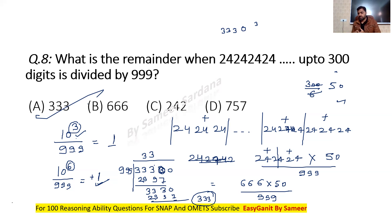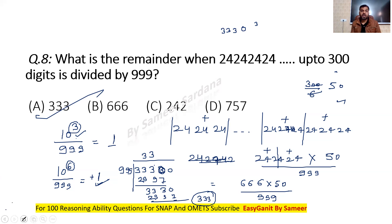These are the 8 questions from basic remainder theorems, unit digit, and last-digit methods. I'll be uploading part 2 of number system covering Euler remainder theorem, Wilson's remainder theorem, and other basic remainder theorems. Subscribe to the channel to access 100 reasoning ability questions for SNAP and OMADS. There's already a compiled video of 100 reasoning ability questions that will really help you for SNAP. Don't forget to subscribe — thank you so much for watching, please share with your friends.